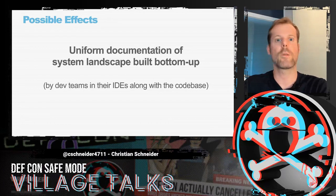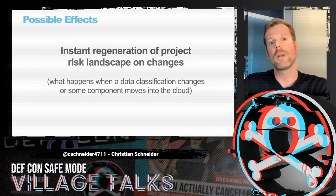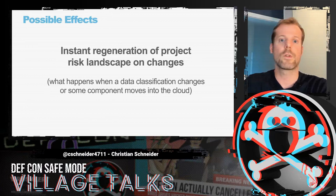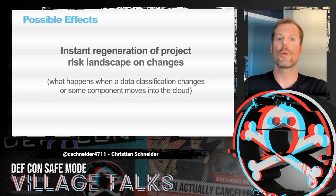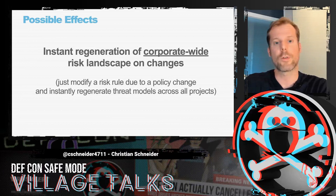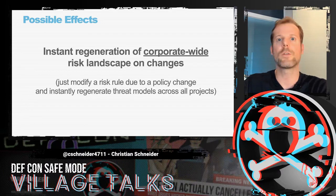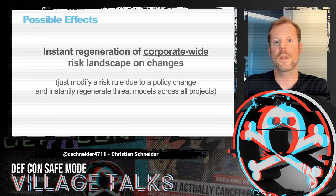It's easy to keep threat models up to date compared to classic approaches — enabling continuous threat modeling. It's easy to instantly regenerate a project's risk landscape. If something changes — for example, a data classification becomes more confidential, or a component is moved to the cloud — you can just regenerate it and see if new risks emerge. You can even do instant risk regeneration at the corporate level: when a policy changes or new regulatory requirements are introduced, adjust your custom risk rules and execute ThreadGile on all projects to see which ones have new mitigation to-dos.